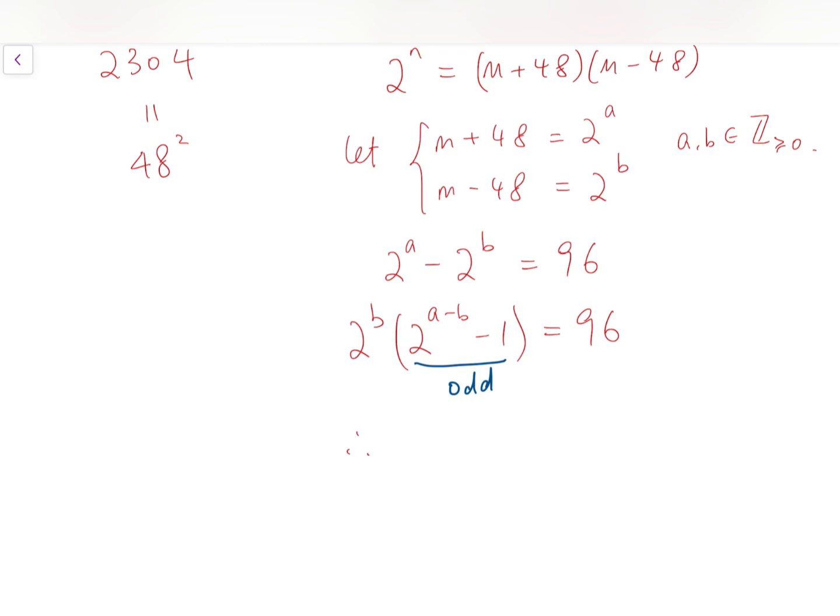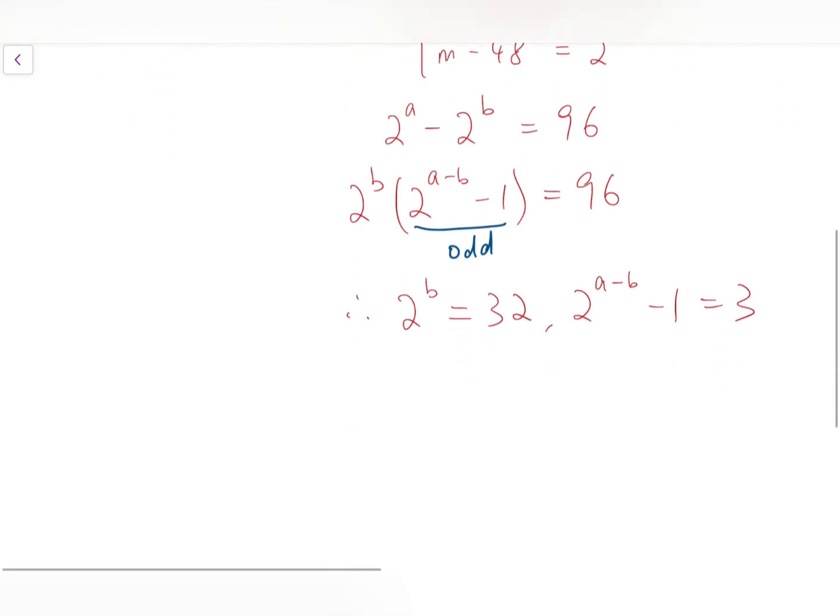So we can deduce that 2^b has to equal 32, so that dividing 96 by 32, we have the remaining odd factor, which is 3. So that means b equals 5.